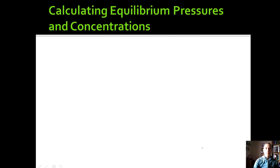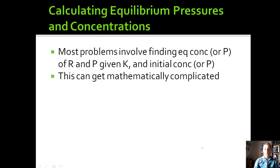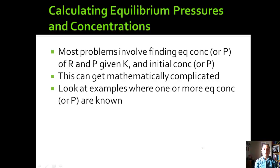Most problems involve finding the equilibrium concentrations of reactants and products given a K value and initial concentrations or pressures. This can get mathematically complicated depending on the situation. We'll look at examples where one or more equilibrium concentrations are known at the beginning, which makes the math simpler.